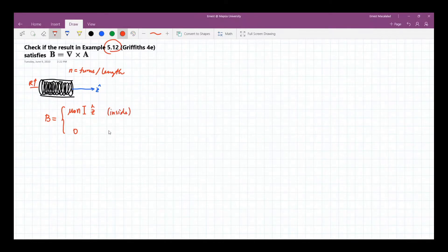Example 5.12 shows that if you have a solenoid, the magnetic field inside it is constant and only depends on the current that you allow to flow in the solenoid and the number of turns per unit length. And the magnetic field outside is zero.